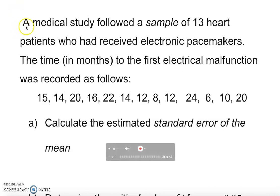Okay, let's take a look at this example. A medical study followed a sample of 13 heart patients who had received electronic pacemakers. The time in months to the first electrical malfunction was recorded as follows. These are the sample given, 13 samples.